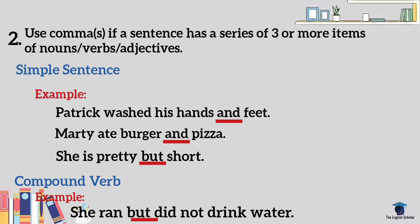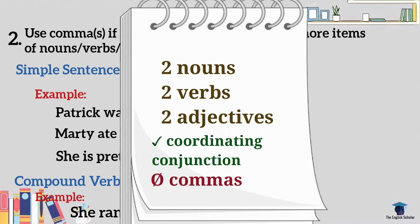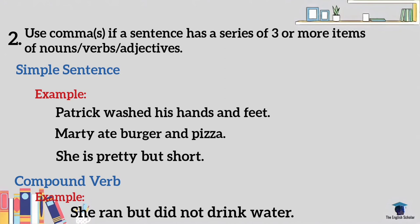Are these sentences written correctly? Yes, absolutely. The rule is: if a sentence has only two nouns, two verbs, or two adjectives, we use coordinating conjunctions but not commas. In the examples we have two nouns (hands/feet, burger/pizza), two adjectives (pretty/short), and two verbs (ran/drink). So even though we use coordinating conjunctions, we do not necessarily use commas.